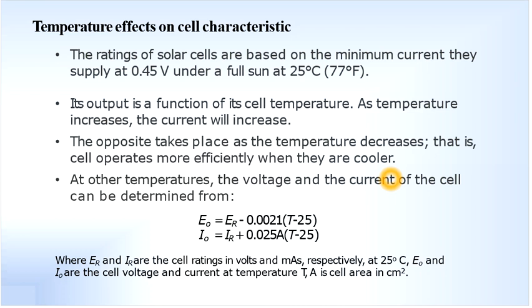The ratings of solar cells are based on the minimum current they supply at 0.45 volts under a full sun at 25 degrees centigrade, which is 77 degrees Fahrenheit. Its output is a function of cell temperature — as temperature increases, the current will be increasing, and the opposite takes place as temperature decreases. The cell operates more efficiently when they are cooler.